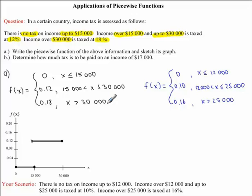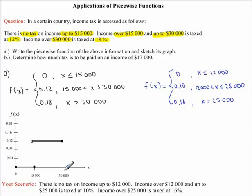Now we have our last interval: when x is greater than $30,000, our f of x value is equal to 0.18. On the graph, 0.18 is found halfway between 0.16 and 0.2. Because x cannot equal $30,000, we indicate this with an open circle, and our interval carries on in that direction. Here we have our sketch of our piecewise function.